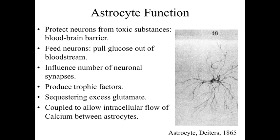Nerve cells are very susceptible to pathogens and toxic substances, and the body has a limited ability to replace these cells or their functions. If we lose nerve cells, we're generally going to have some type of deficit. So having a functional blood-brain barrier minimizes the toxic and harmful substances that can get in and potentially kill off nerve cells.